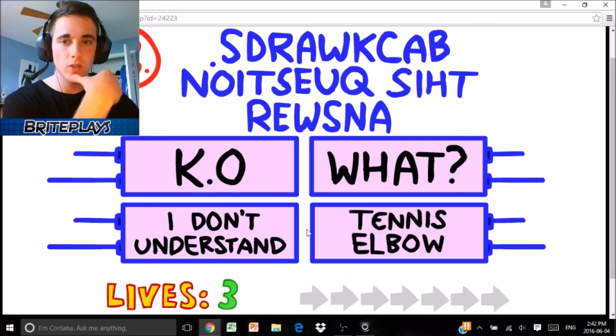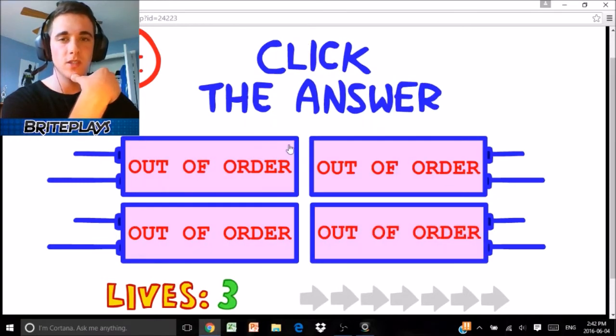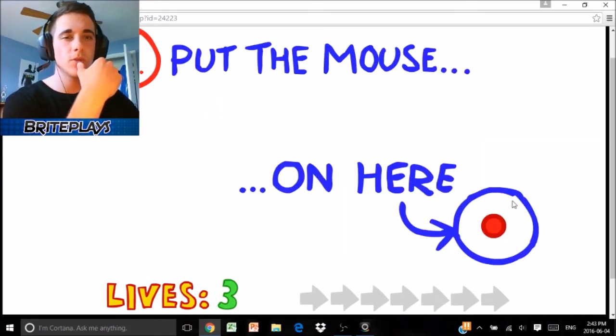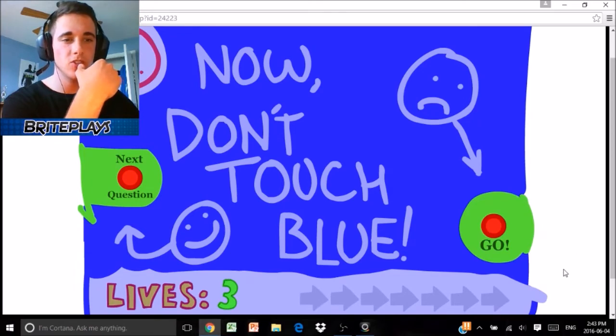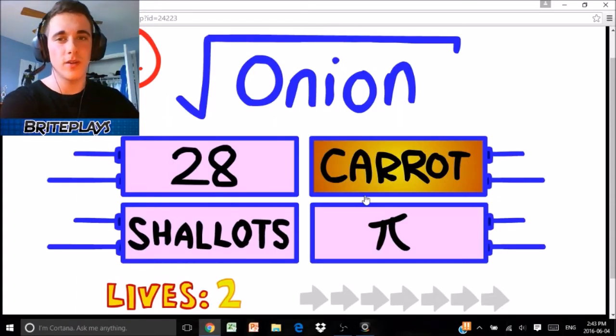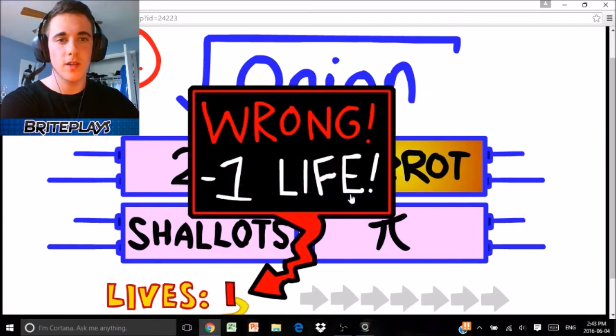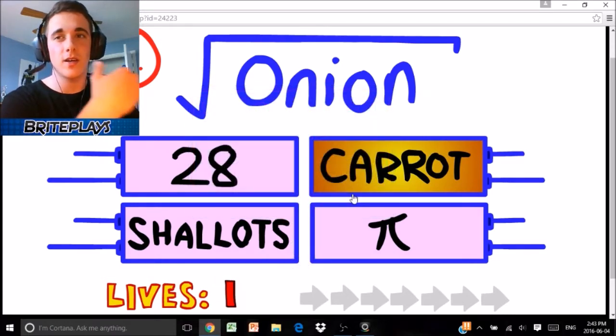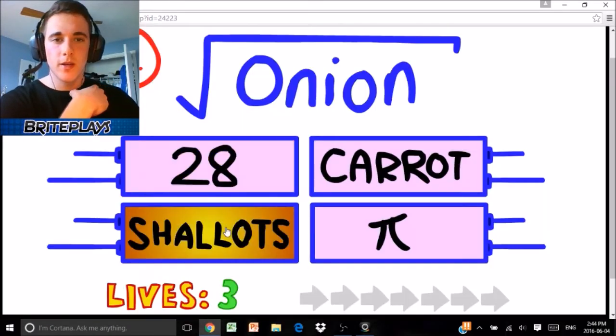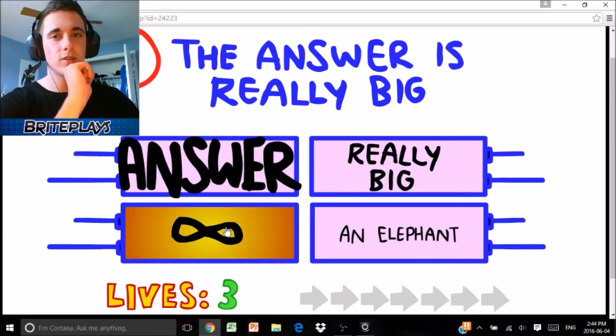Answer this question backwards. Okay. Click. Oh, I see you. Put the mouse on here. Oh, you sneaky devil. Damn. Wait. You know what? Oh. Your boy figured it out. The square root of onion is carrot. Yeah, that's nice. 28. Shallots. I should obviously know that answer. The answer is really big.